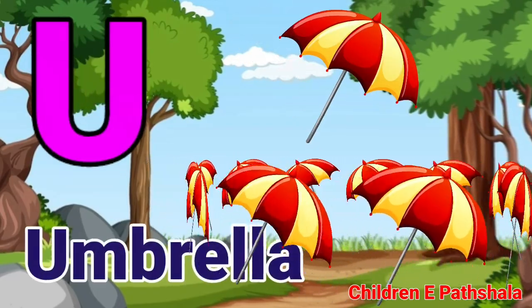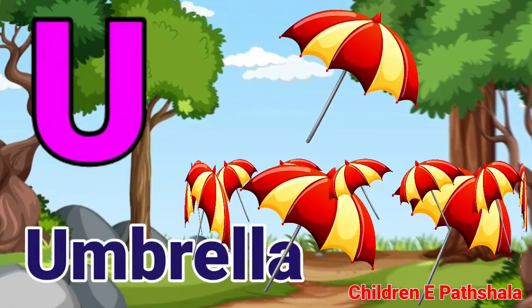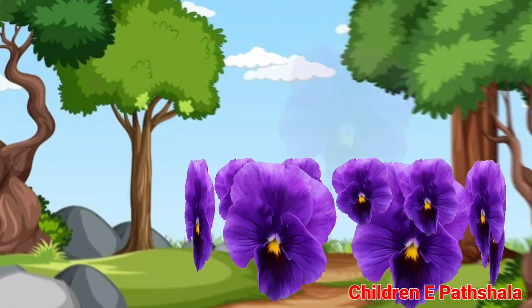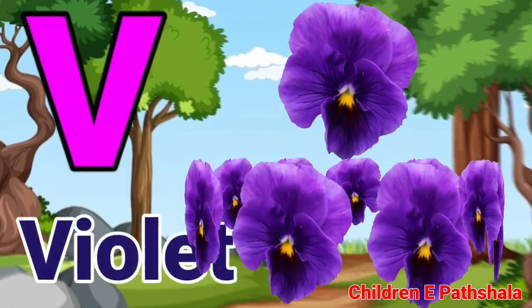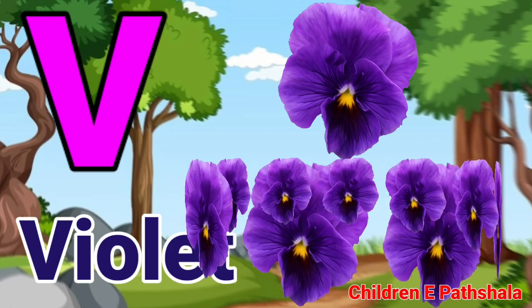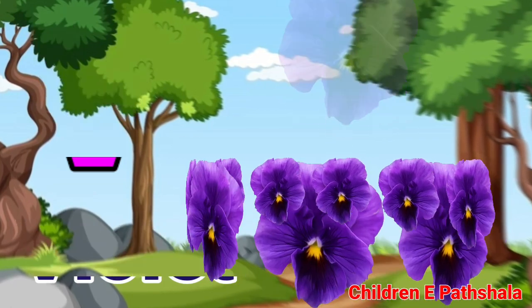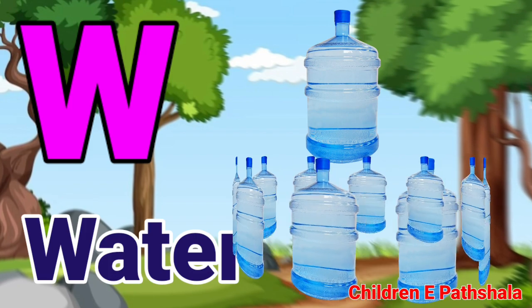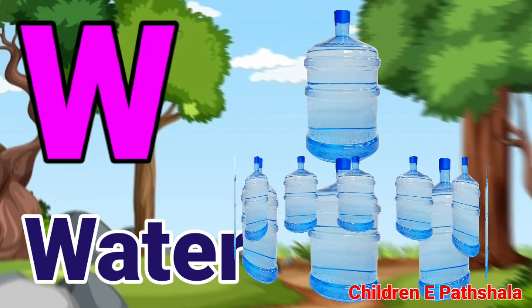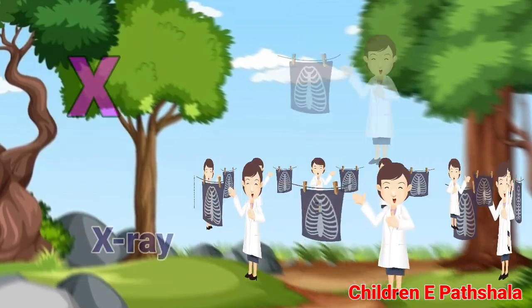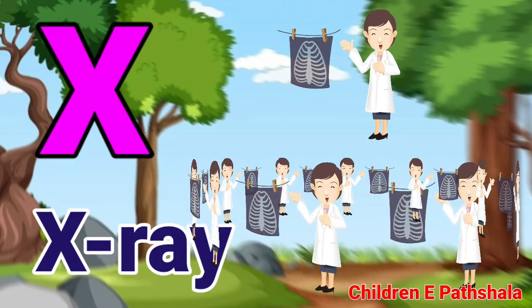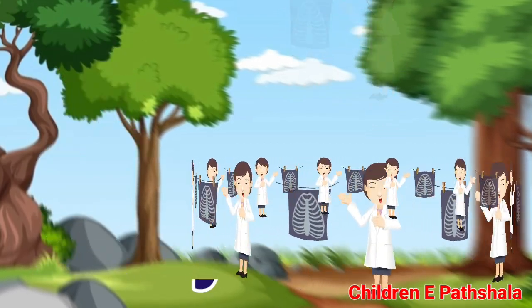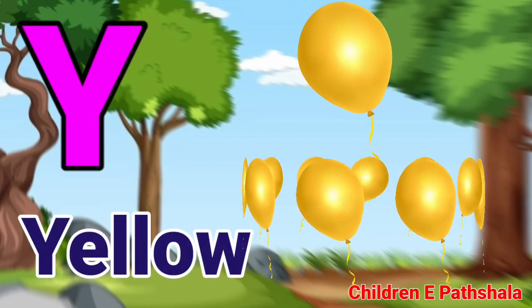U for Umbrella. V for Violet. W for Water. X for X-Ray. Y for Yellow.